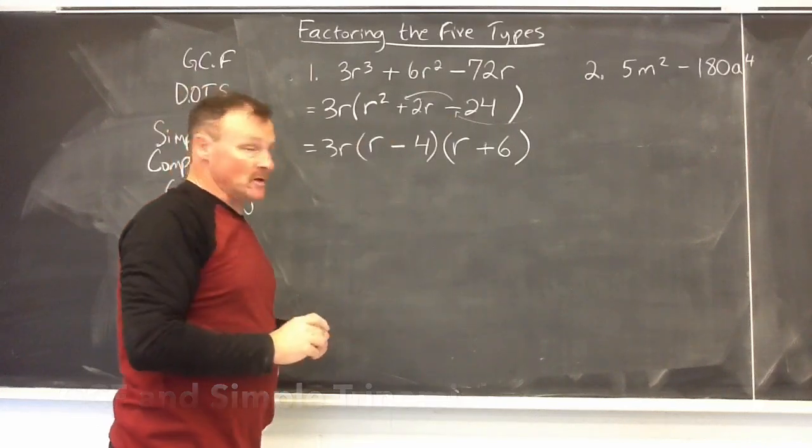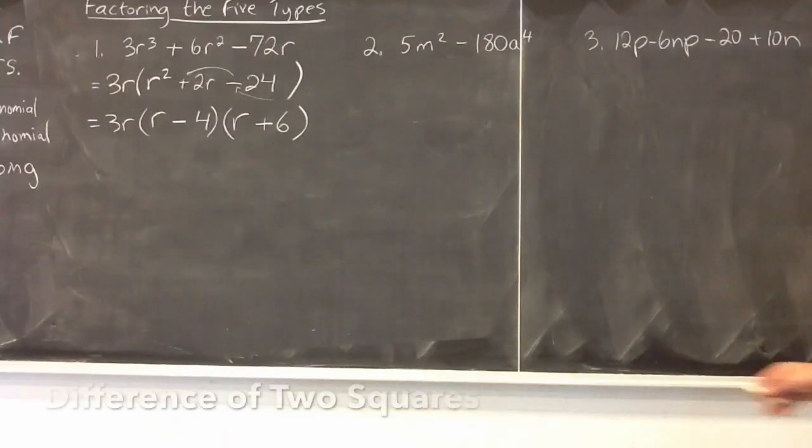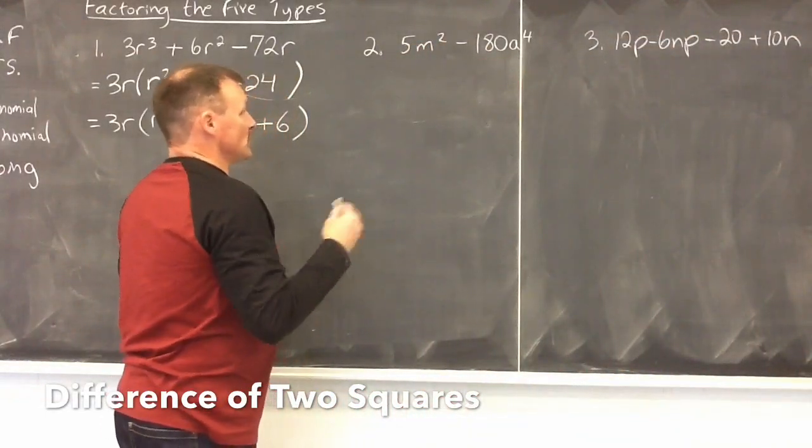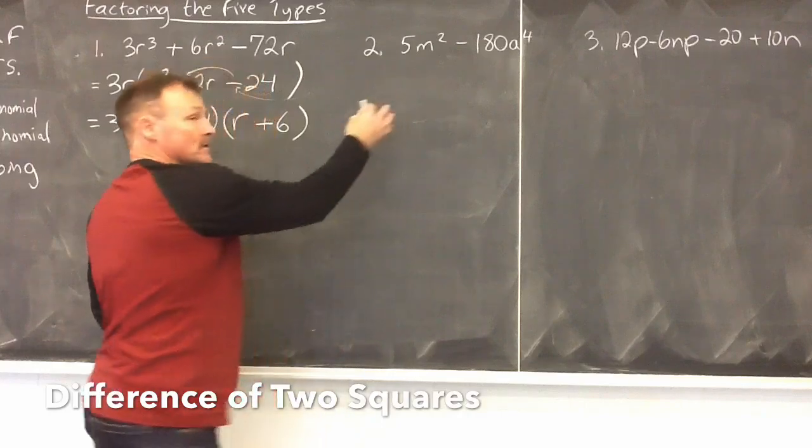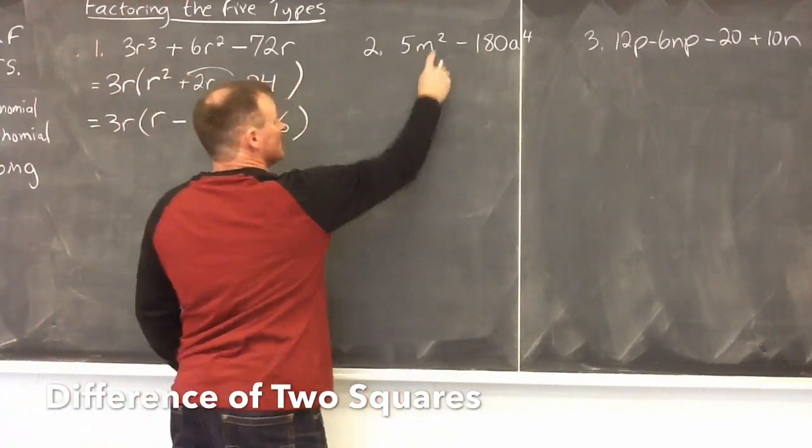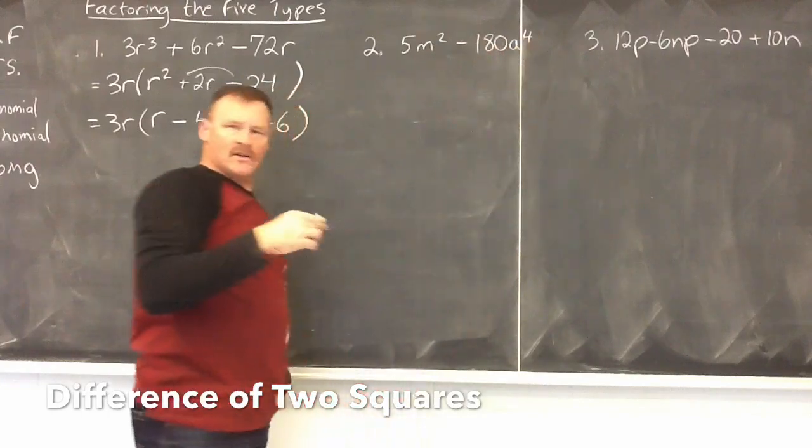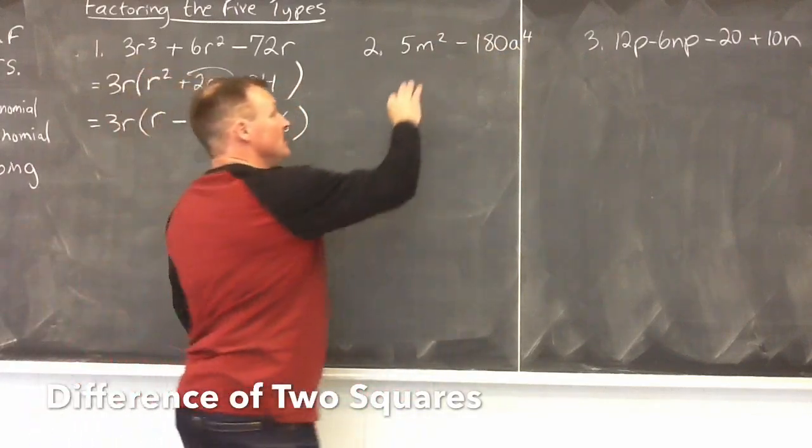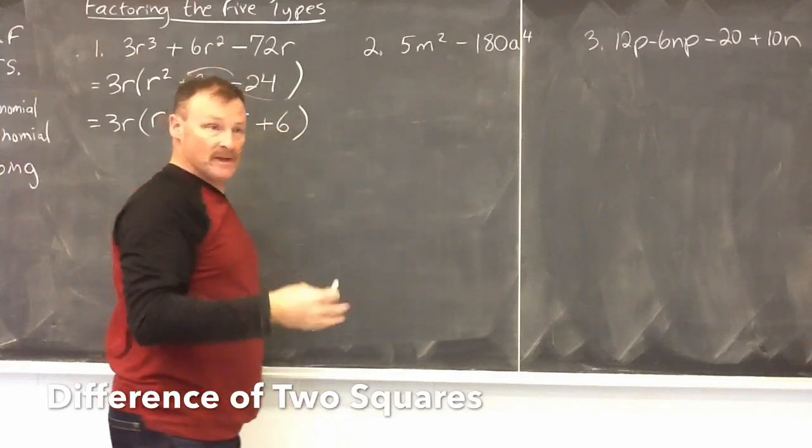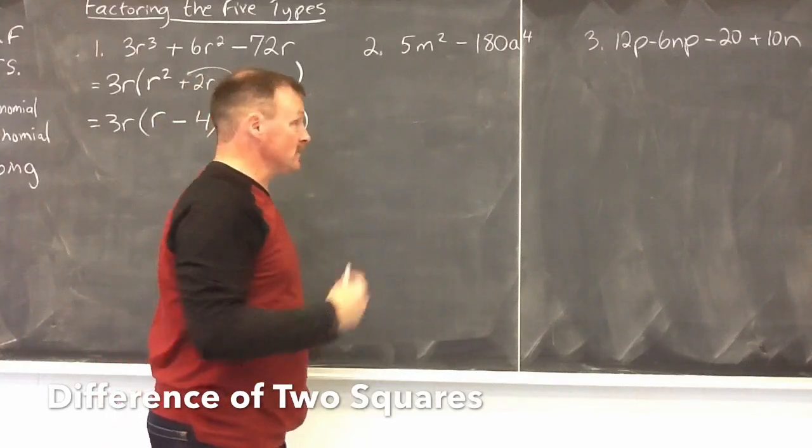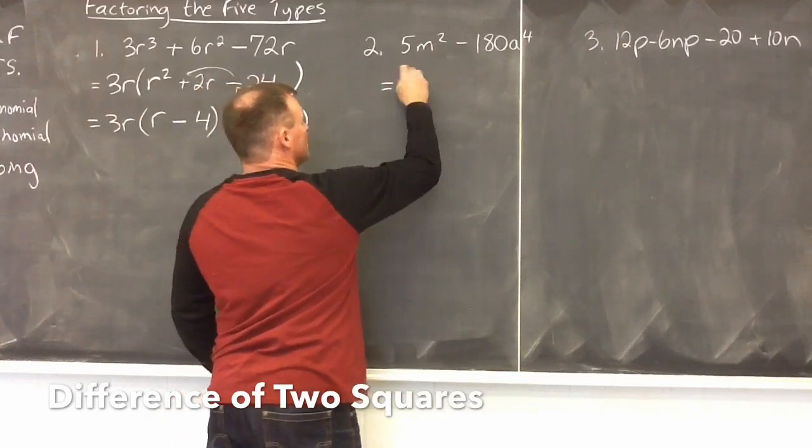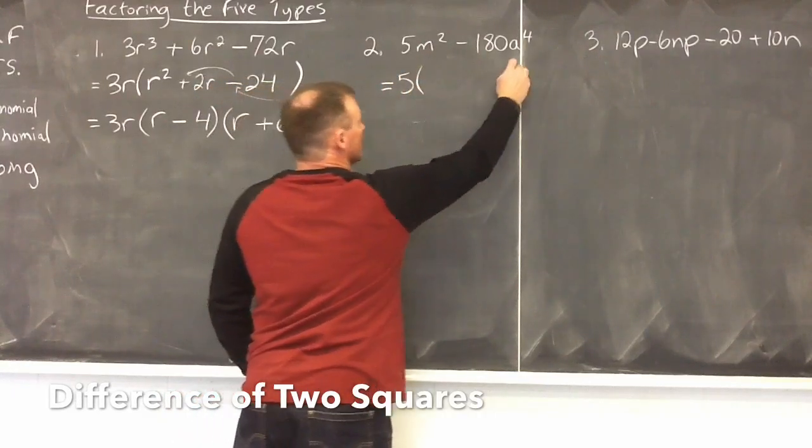Now we're going to move on to the next question. We have two terms, and just like before, we're going to be looking for the GCF. I have a 5 that goes into both of the terms. You might look and say there's a square and there's a 4, can you divide out something there? And no, you can't, because those are exponents. There are two terms, so we're expecting this is going to turn into a difference of two squares, if possible. So as I said before, the 5 comes out of both terms. You divide it out of both of them.